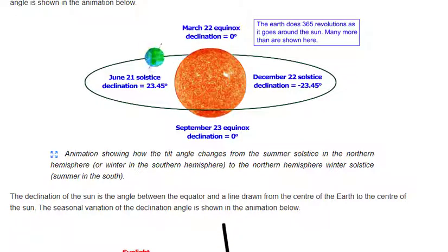Animation showing how the tilt angle changes from the summer solstice in the northern hemisphere (or winter in the southern hemisphere) to the northern hemisphere winter solstice (summer in the south).